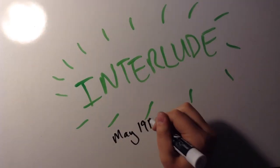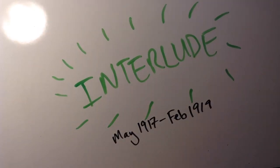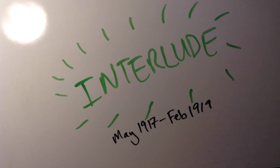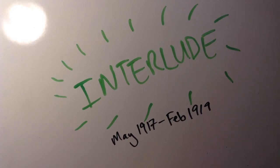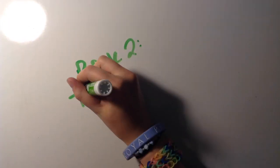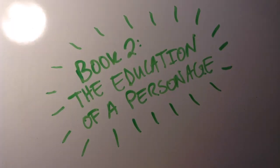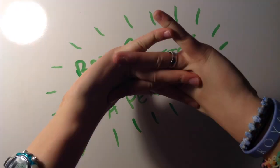The interlude is a short section consisting of letters and poetry. The first letter is from Monsignor Darcy to Amory, who is now in the army. Darcy's letter concludes with poetry, and Amory's begins with poetry. After the interlude begins book two, The Education of a Personage. The title comes from a conversation between Amory and Darcy. This is where things start to get interesting and very deep.